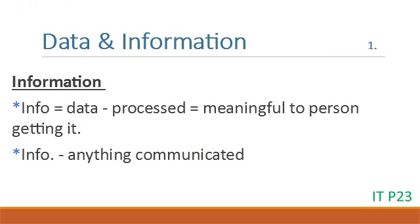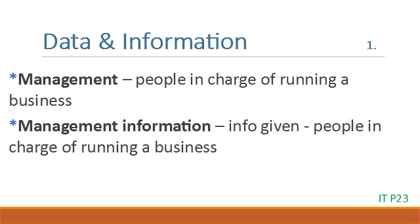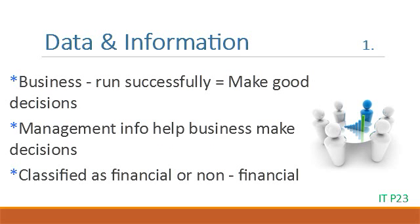Information is data that has been processed so that it is meaningful to the person receiving it. Information is anything communicated — given to someone else. Management is the term used to refer to the people who are in charge of running a business. Therefore, management information is the type of information given to the people in charge of running a business. For a business to run successfully, management needs to make good decisions, and management information is vital to help a business make those decisions.